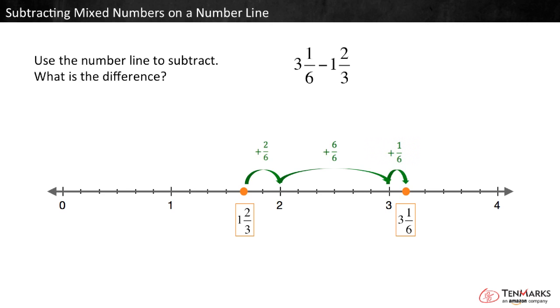Altogether, the distance between the two numbers is 2 sixths plus 6 sixths plus 1 sixth. That's 9 sixths, or 1 and 3 sixths.